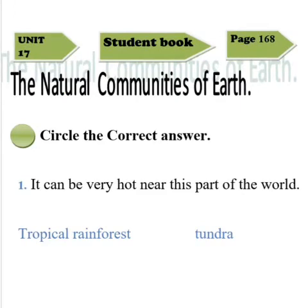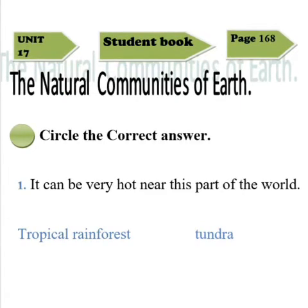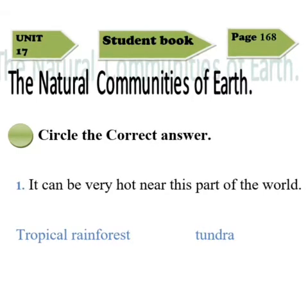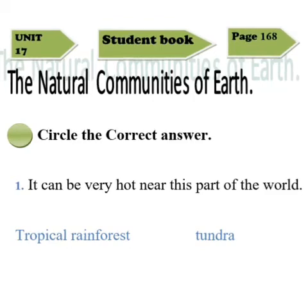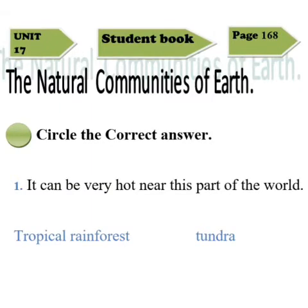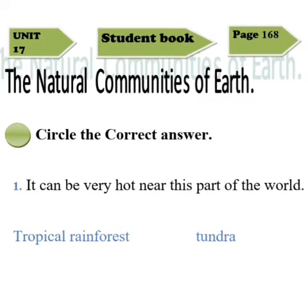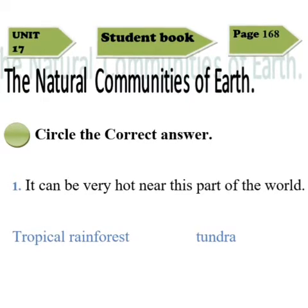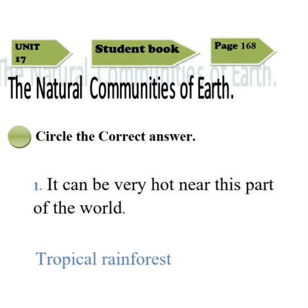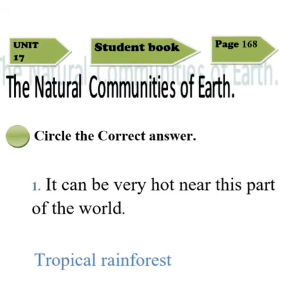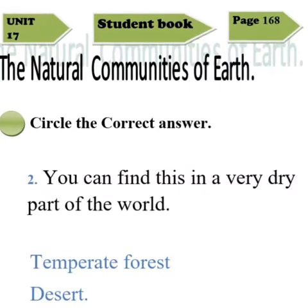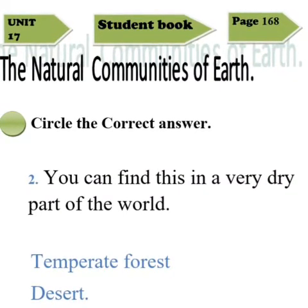Here you may see Exercise B. We have to circle the correct option according to the sentence. Sentence number one: it can be very hot near this part of the world. If you remember that tundra and taiga were the coldest biomes on earth, so the correct option is tropical rainforest. Kindly circle the option tropical rainforest.